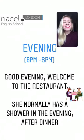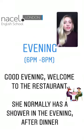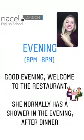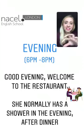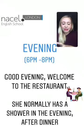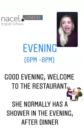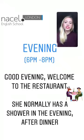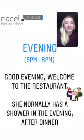Next we have the evening. For some reason lots of students don't use this in their day-to-day conversation — they say night or day. Evening is that transition between the afternoon and the night, the middle time. This is about 6 o'clock until 8 o'clock at night. For example: good evening, welcome to the restaurant, and she normally has a shower in the evening after dinner.